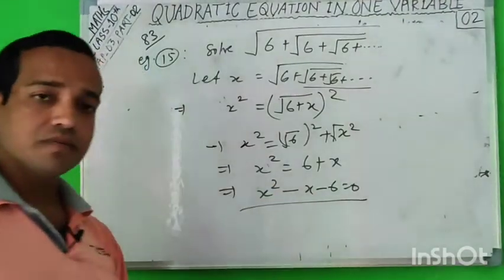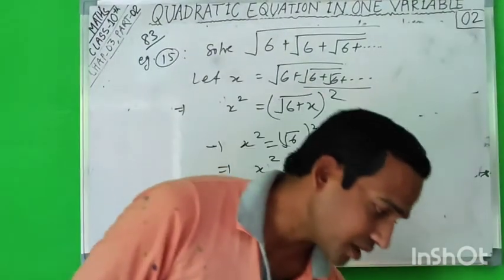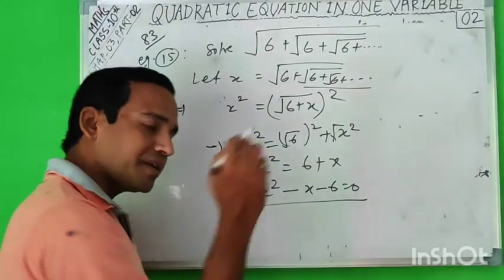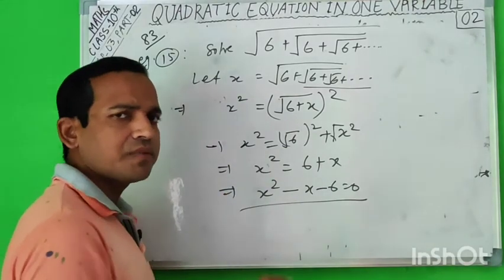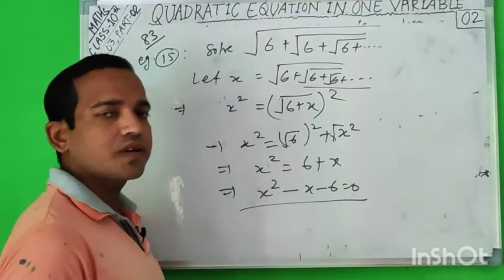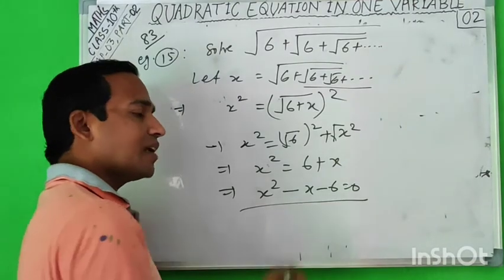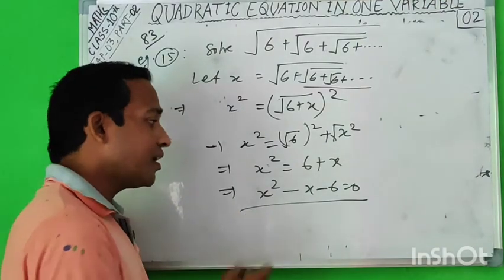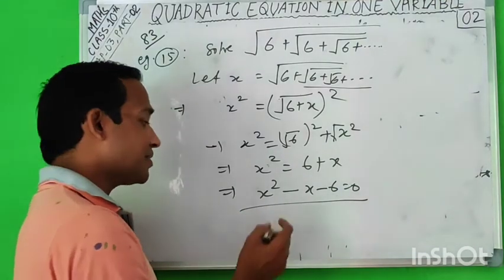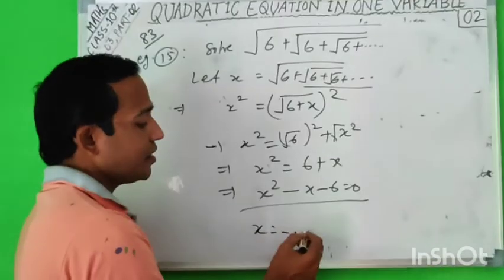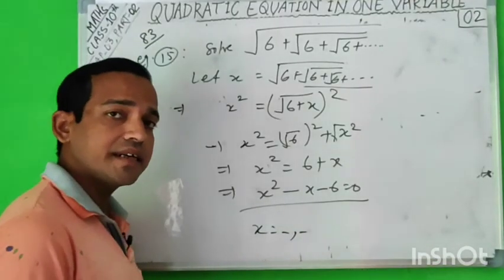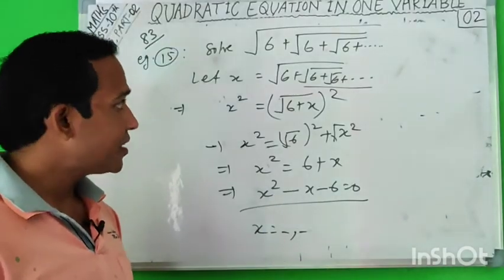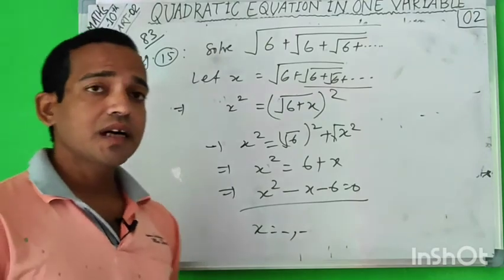Now solve this quadratic equation x² - x - 6 = 0. You can use the factorization method or the formula x = (-b ± √(b² - 4ac)) / 2a — whichever you prefer. Find the two roots of x. All the questions and examples in your book are covered — please solve them all. This completes the chapter.